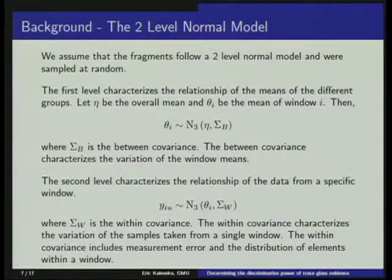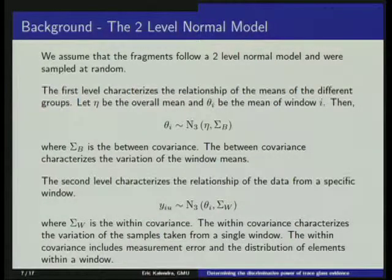This whole model is characterized by two covariance matrices. The actual window means are unobservable because we observe them with error — the window is not completely homogeneous and the data collection method introduces some error. Because we're only measuring each fragment once, we can't discriminate between instrument error and error from inhomogeneity of the window. This is characterized by sigma_w (within a window) and sigma_b (between windows), which describes the variation between all windows in our population.